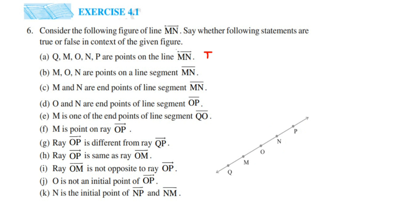The next statement is: M, O, N are points on line segment MN. A line segment has a fixed length and two endpoints. MN is located from here to here. They are talking about three points M, O, and N — all three are located on this line segment MN. So the answer will be true.